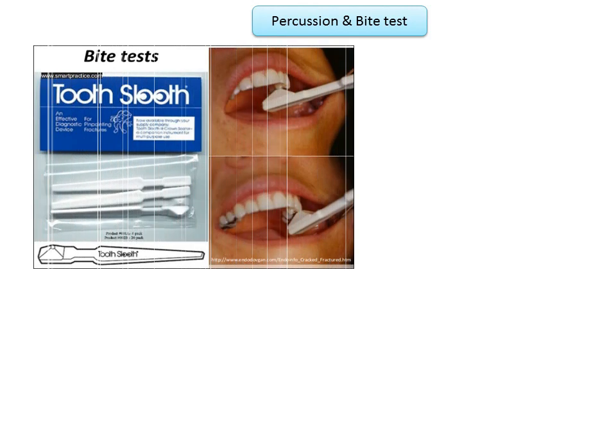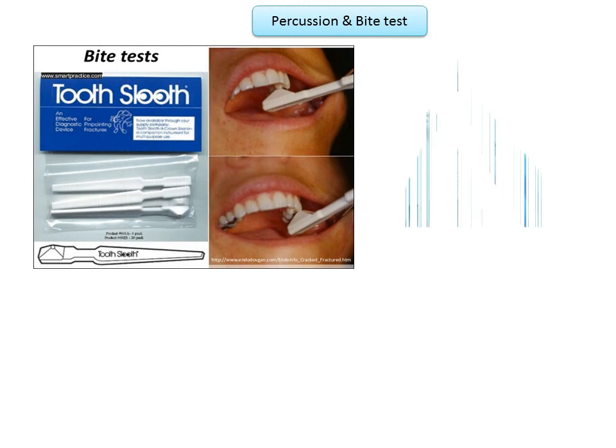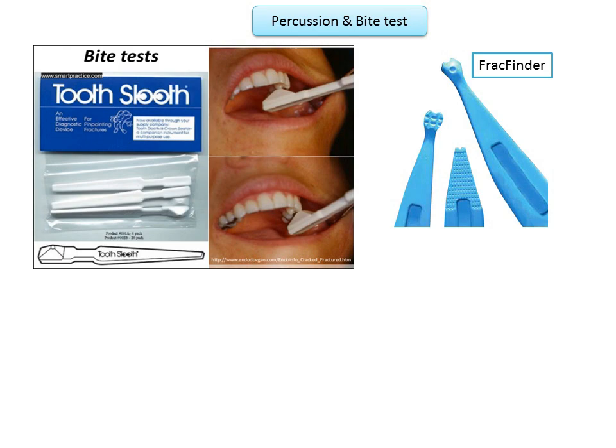Moving on to other special tests such as percussion and bite test, these are indicated when a patient presents with pain while biting. For the bite test to be meaningful, a device should be used that allows the clinician to apply pressure to individual cusps or areas of the tooth. Devices used include cotton tip applicators, toothpicks, orange wood sticks, and rubber polishing wheels, as well as specifically designed devices like the Tooth Sleuth and Frag Finder. The percussion and bite test helps to localize the tooth involved when the patient does not know which tooth is sensitive to biting pressure.